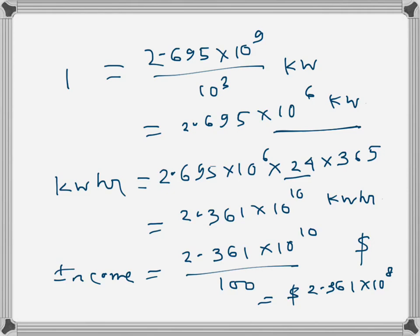That's 24 times 365 hours in a year. Once we had the kilowatt-hour value, we know the rate of energy, so we just multiplied. Since it was in cents, we divided by 100 to get it in dollars.